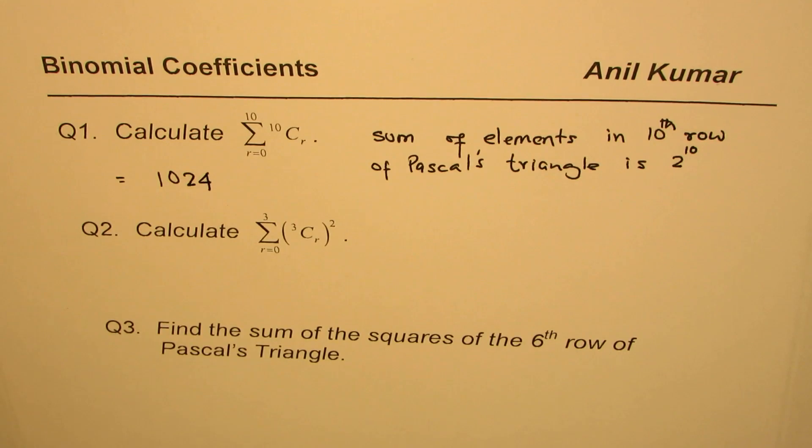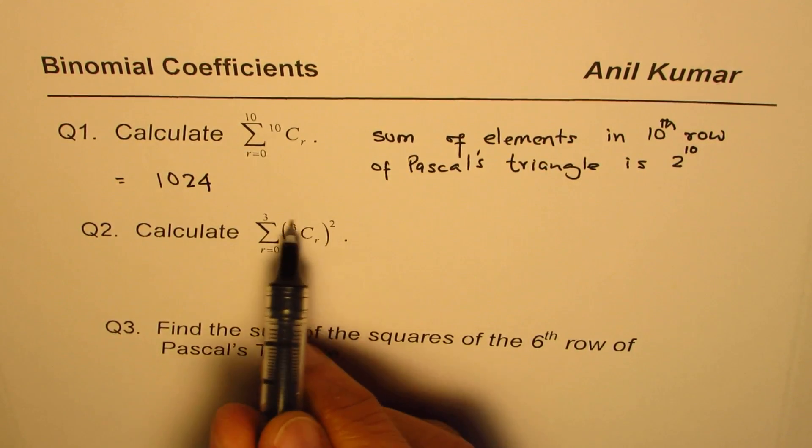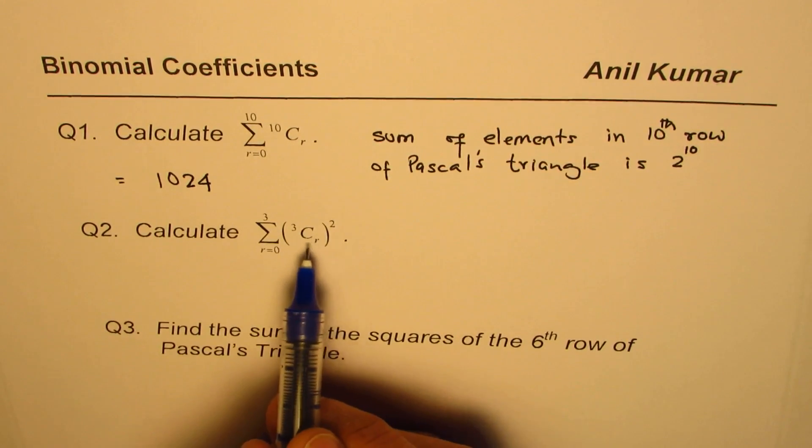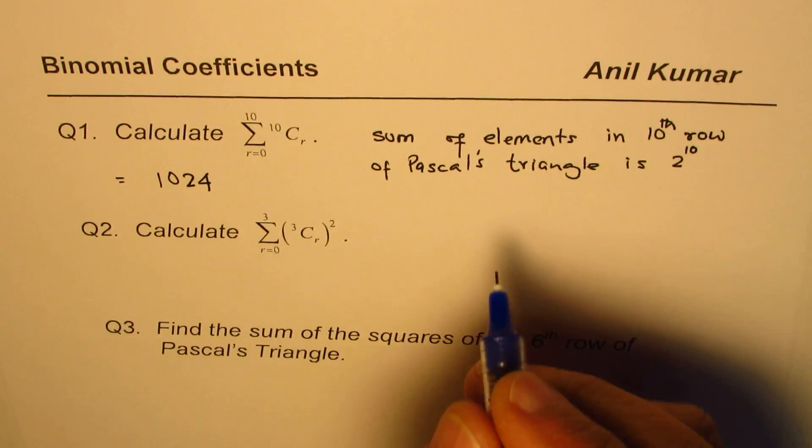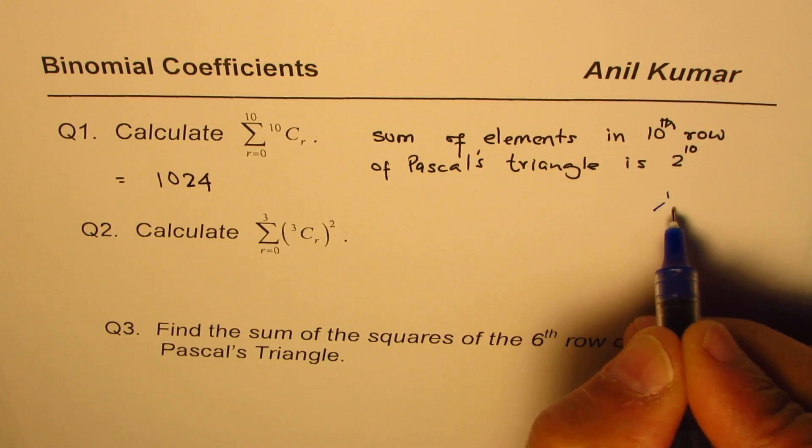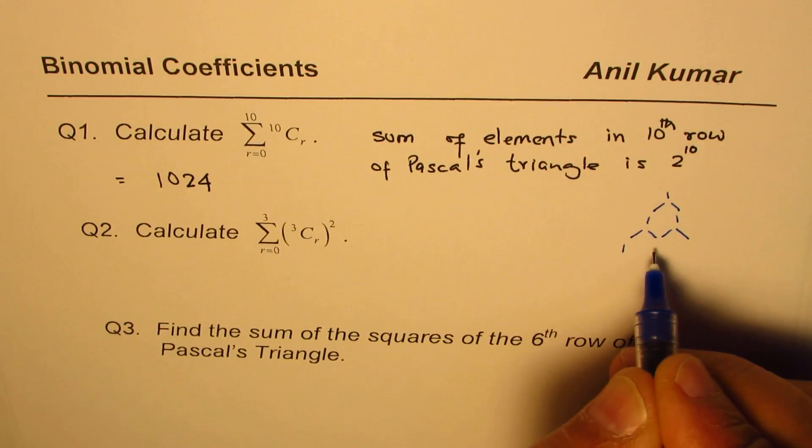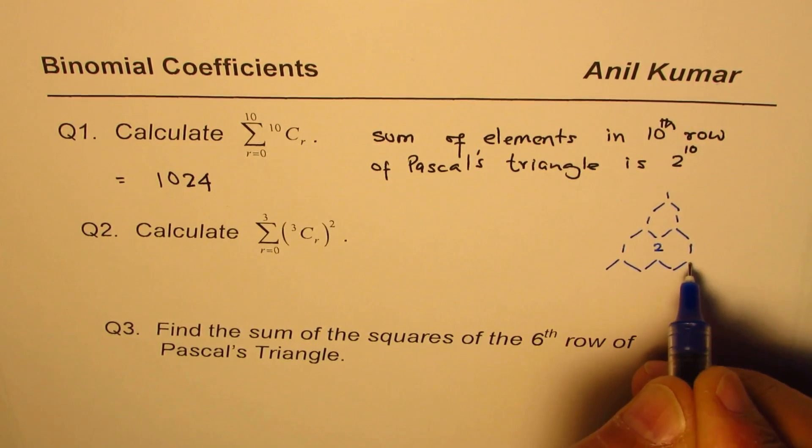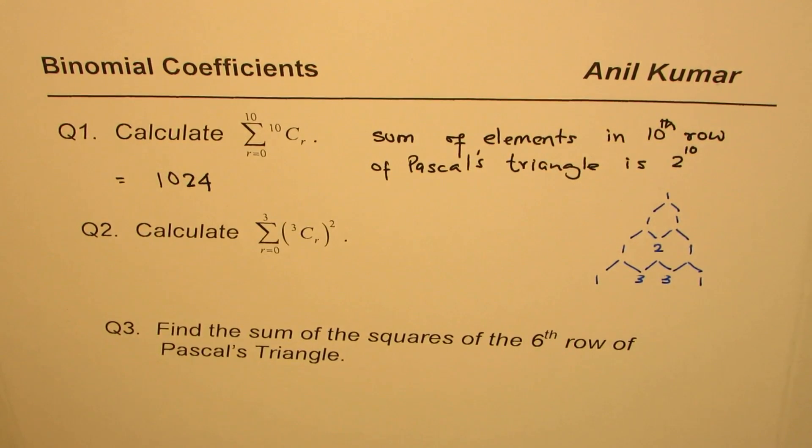Now let's look into question number two, which is, in this case, we are adding the square of these entries. So basically what we have here is 3cr whole square. So you can actually use calculator, calculate these values, but a faster way is look at the Pascal's triangle. So we have 1, 1, 1, and since we have to go three rows, I'll prefer to do this. This is faster than using the calculator. So it is 3, 3, and 1.